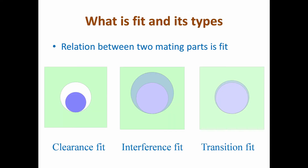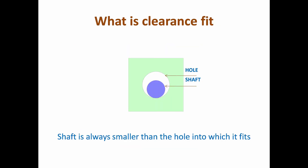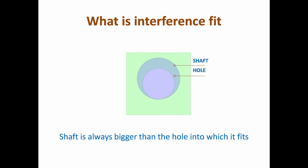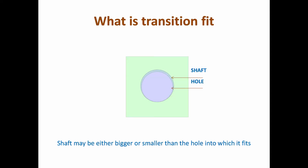What is fit and its types? The relation between two mating parts is called a fit. Types of fits are: clearance fit, interference fit, and transition fit. In a clearance fit, the shaft is always smaller than the hole. In an interference fit, the shaft is always bigger than the hole. In a transition fit, the shaft may be either bigger or smaller than the hole.